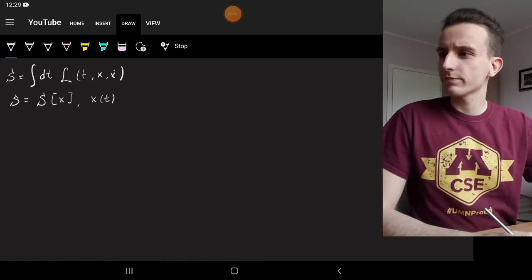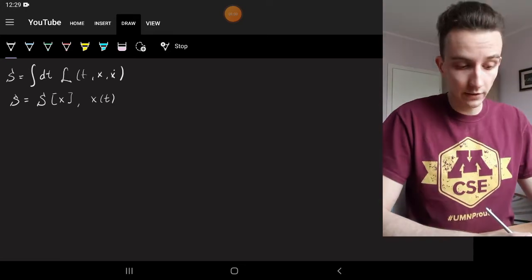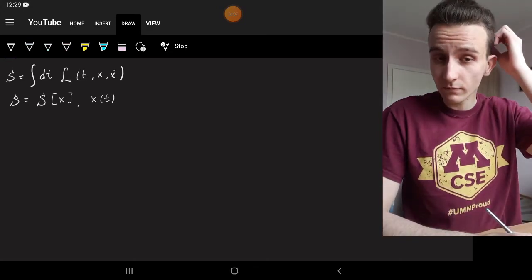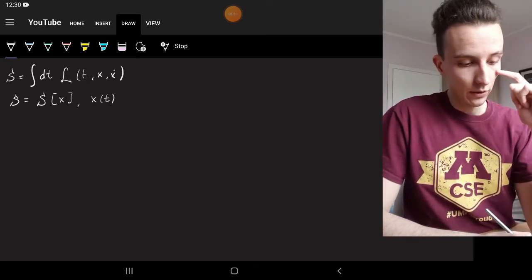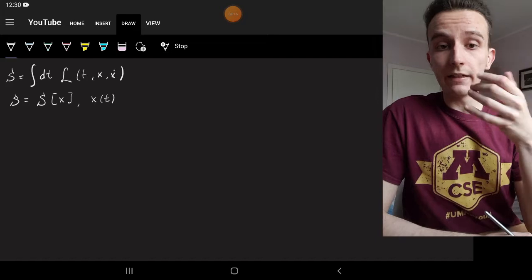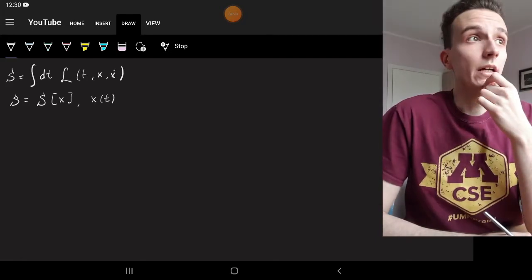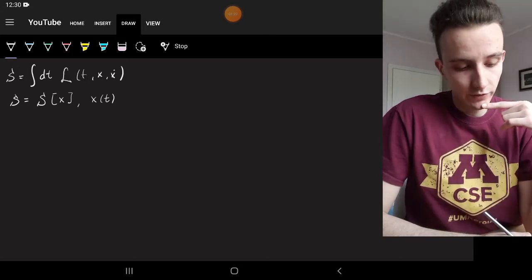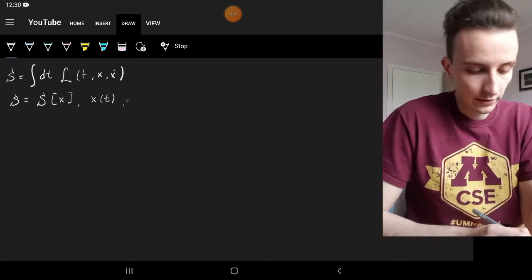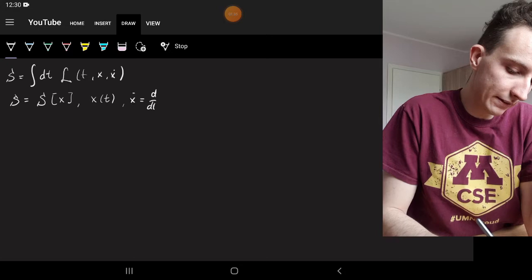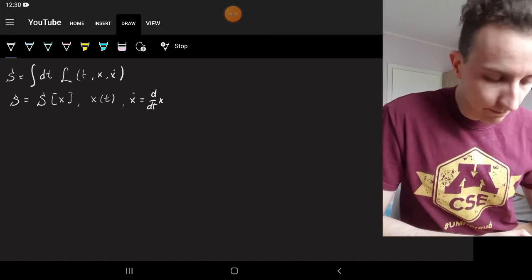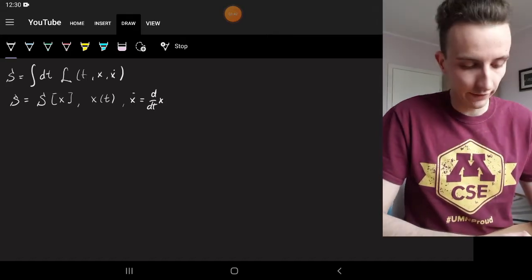And we want to find the stationary points of the integral, which basically means when this s has the minimum value. Now, obviously, if you're integrating over variable t, it's going to depend which function you've got inside. So this L is a function of t, x, and x dot, where x dot is the derivative, d by dt of x, standard notation. And we want to see when this s is going to have its extremum.